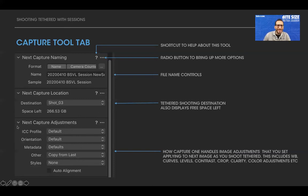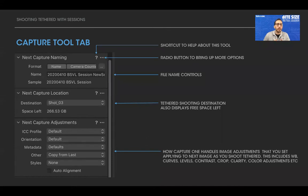Below the location window is next capture adjustments — this controls how image adjustments you set apply to the next images you shoot tethered. This includes white balance, curves, levels, contrast, crop, clarity, color adjustments, and so on. For most intents and purposes, leaving it at default is the way to go unless you're trying to do something custom. We'll touch on it a little bit today.